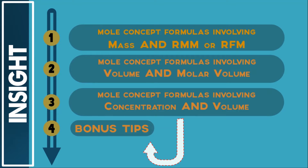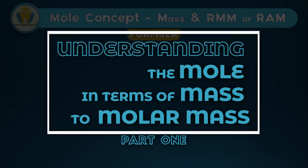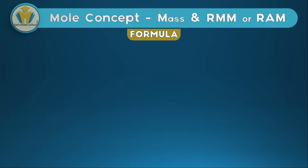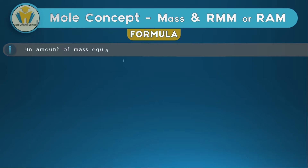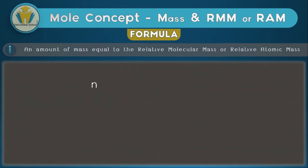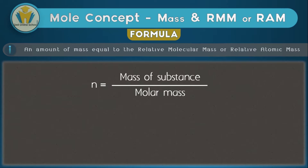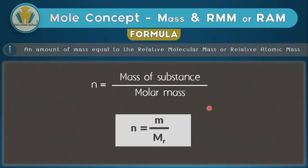The first part is talking about the mole concept when referring to masses. This thinking about the mole was brought about by the second definition from the introduction to the mole concept, where we said an amount of mass equal to the relative molecular mass or the relative atomic mass is equal to one mole. We said n is equal to mass of substance over the molar mass. From this we have the formula n = m/Mr.